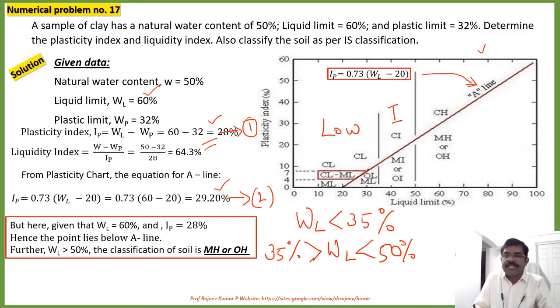If it is greater than 50, WL greater than 50, in this region you will see highly compressible soil in this region. Now here you have the calculated plasticity index is 28 percentage which is below the A line. And the liquid limit is more than 50 percentage. Then the soil will be in this region, somewhere in this region.